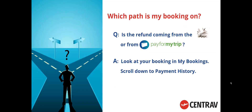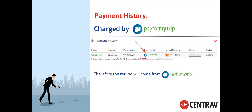Which path is my booking on? Is the refund coming from Pay For My Trip or is it coming from the airline? To find the answer, just look in your booking in My Bookings — you can scroll down and view payment history. Here's an example of one charged by Pay For My Trip: the amount was $2,891.80, with a payment date, processed by Pay For My Trip, and the note says Airfare.